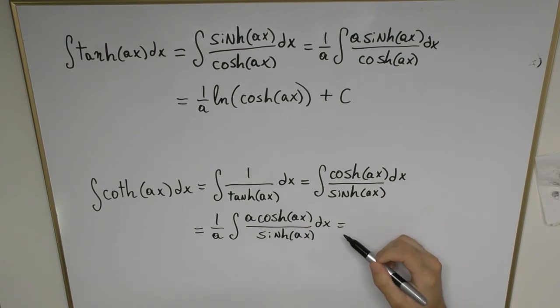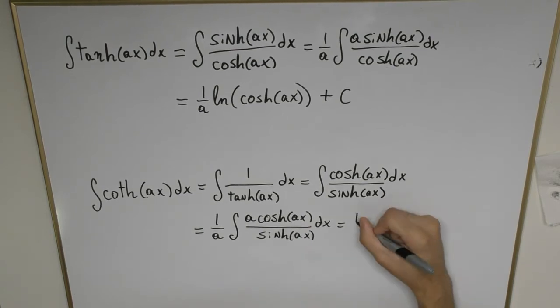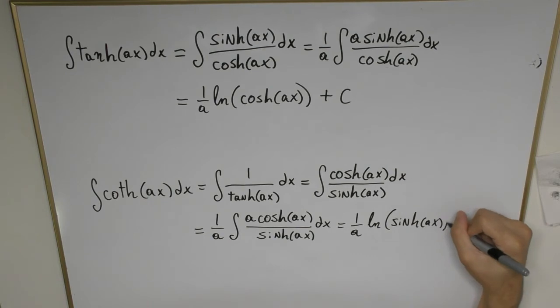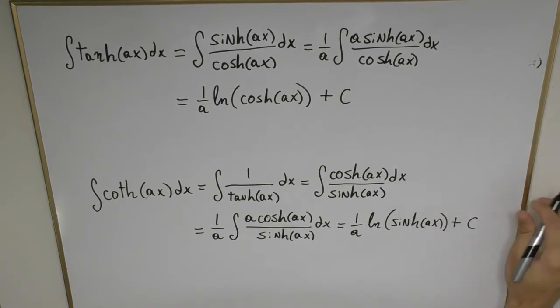The final step is going to be to get this in the form 1 over a natural log of hyperbolic sine of ax plus the constant C and that's going to be our final answer for that.